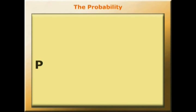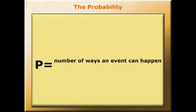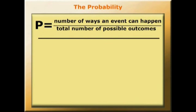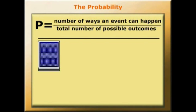Our starting point for understanding probability is to see that the probability of an event P is the number of different ways an event can happen divided by the total number of possible outcomes.